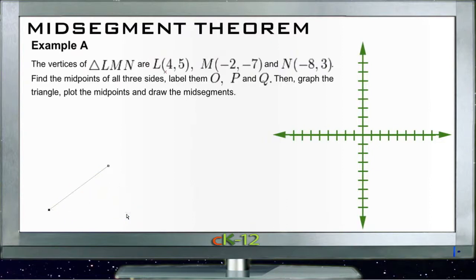If we take a look at Example A, it says that the vertices of triangle LMN are L is (4, 5), M is (-2, -7), and N is (-8, 3).